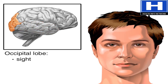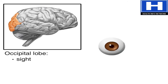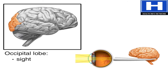The occipital lobe is located at the back of the head, behind the parietal and temporal lobes. The occipital lobe analyzes visual information from the retina, and then processes that information. If the occipital lobe becomes damaged, a person could become blind, even if his or her eyes continue to function normally.